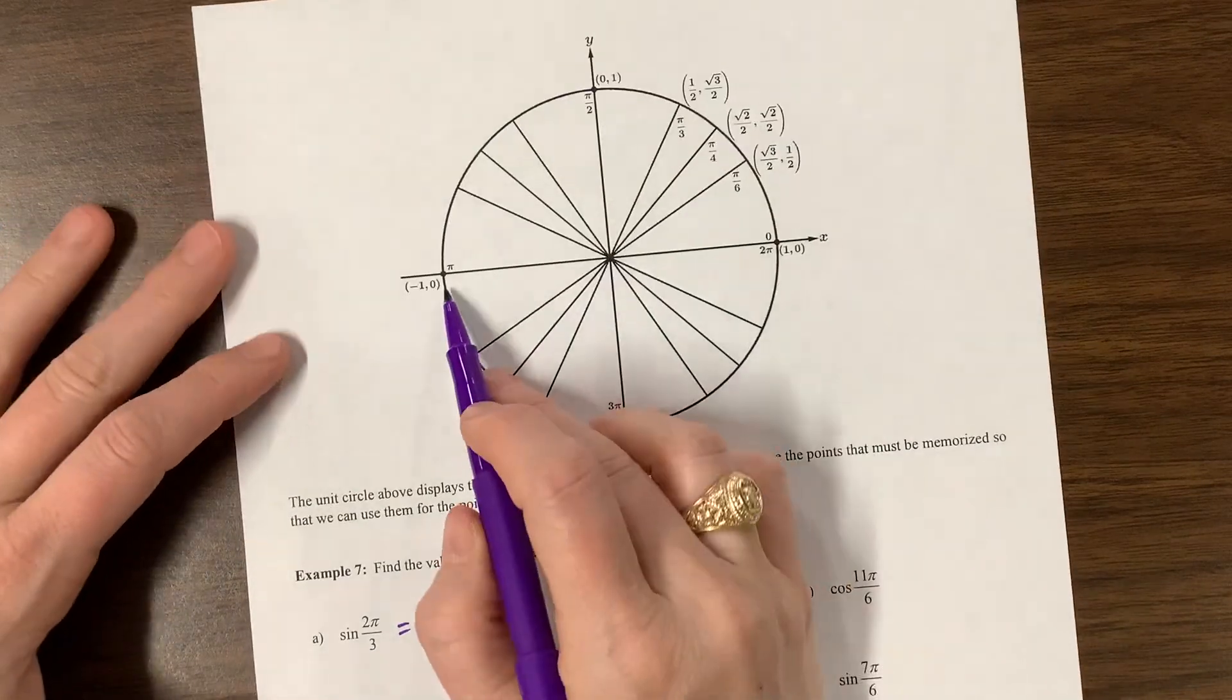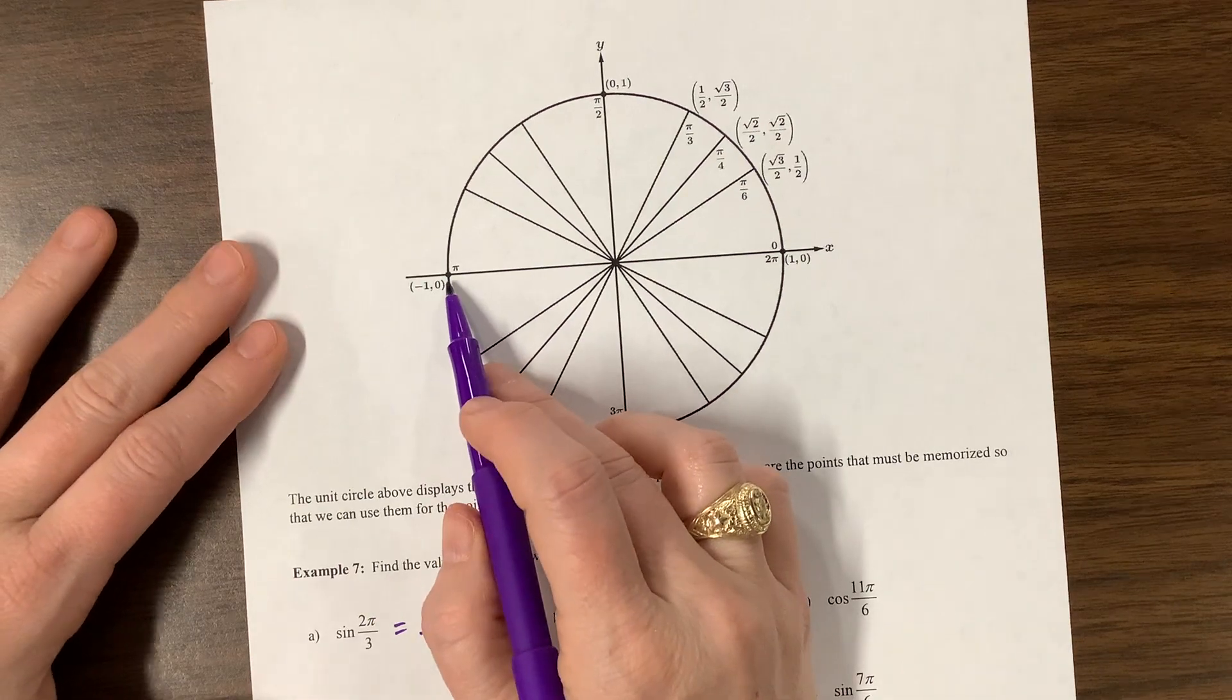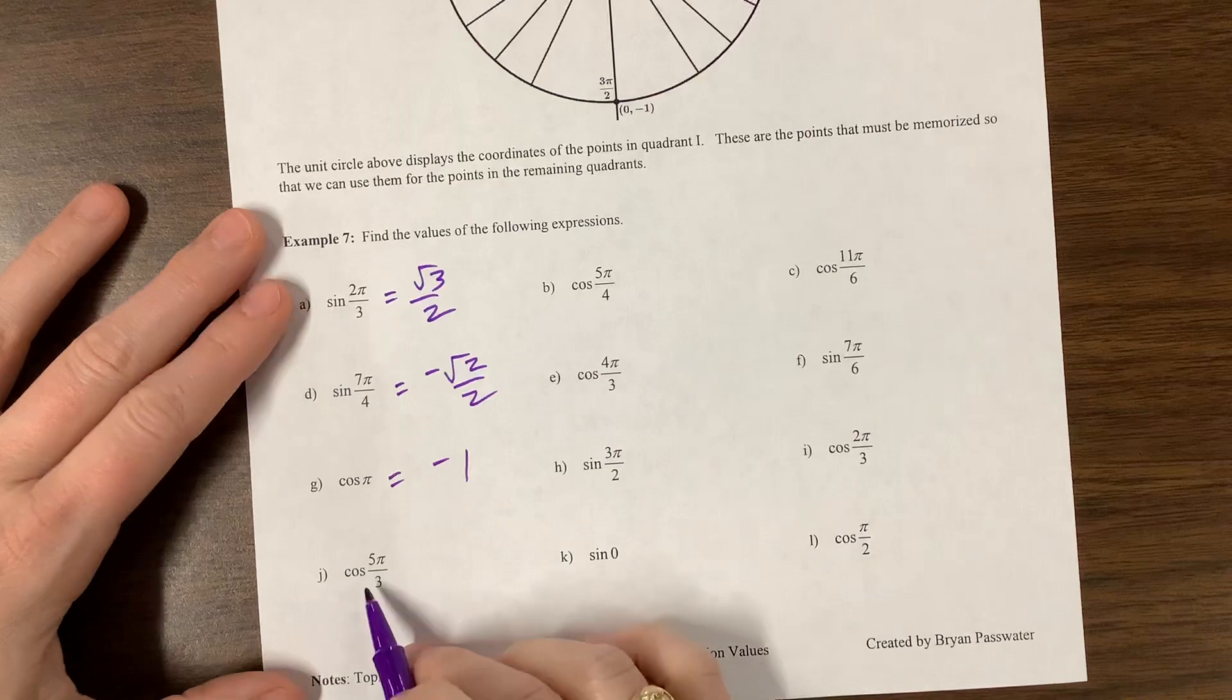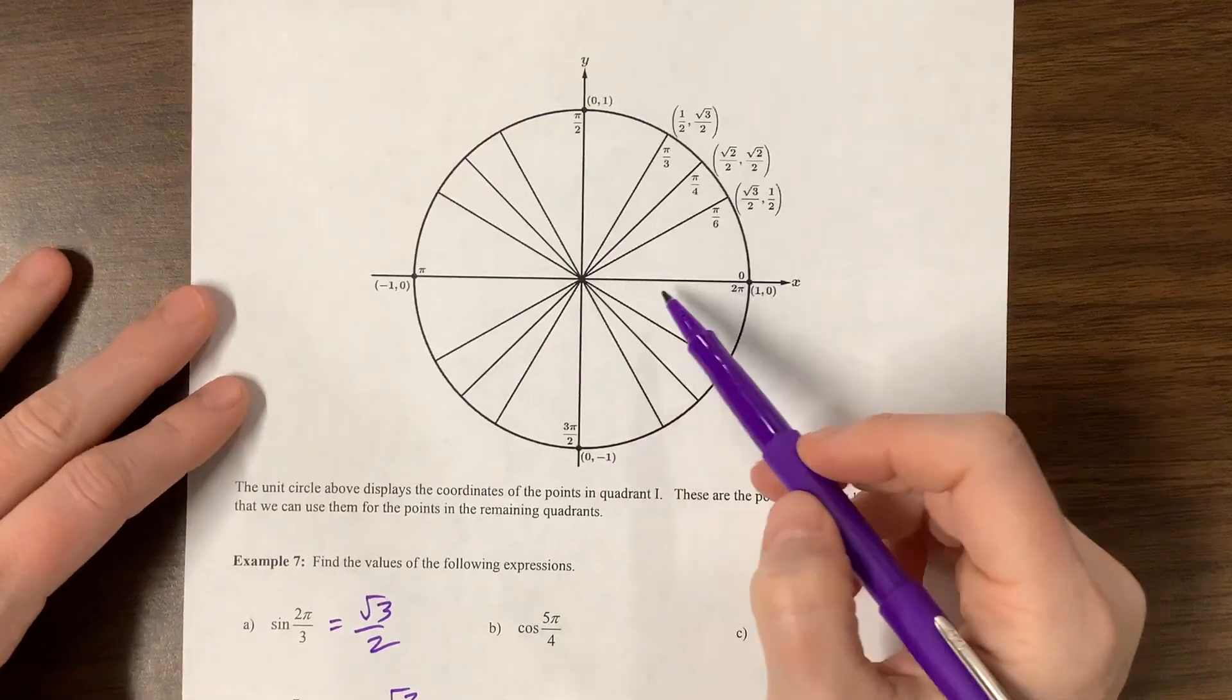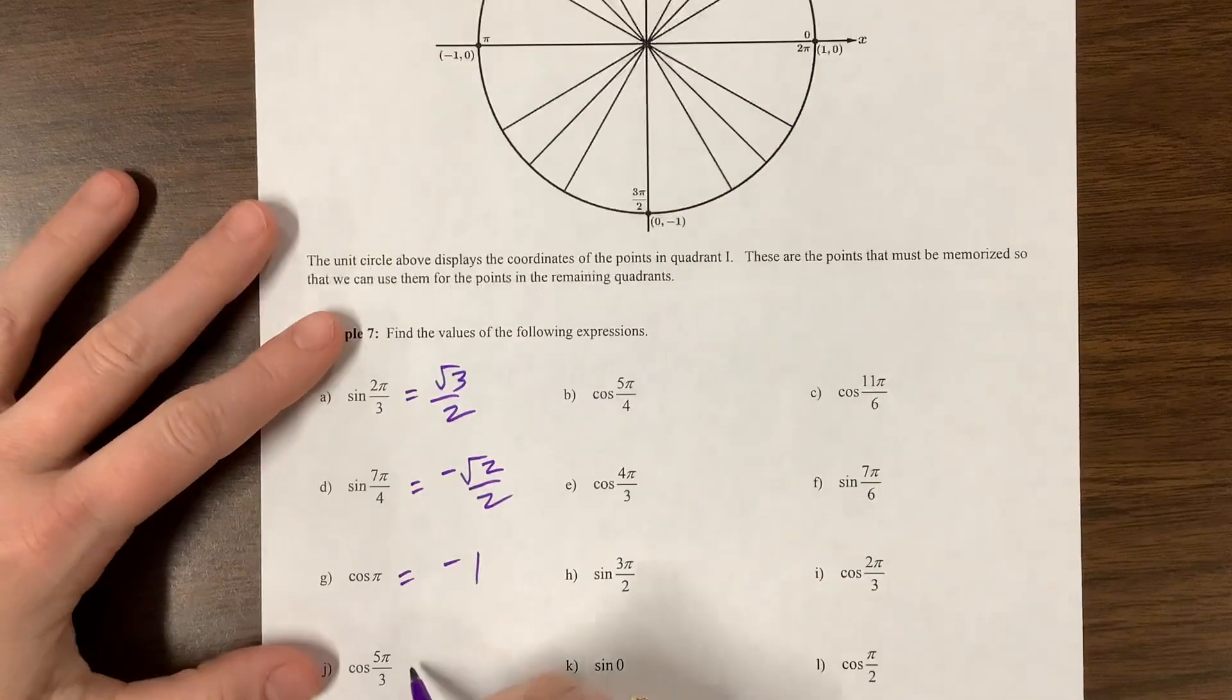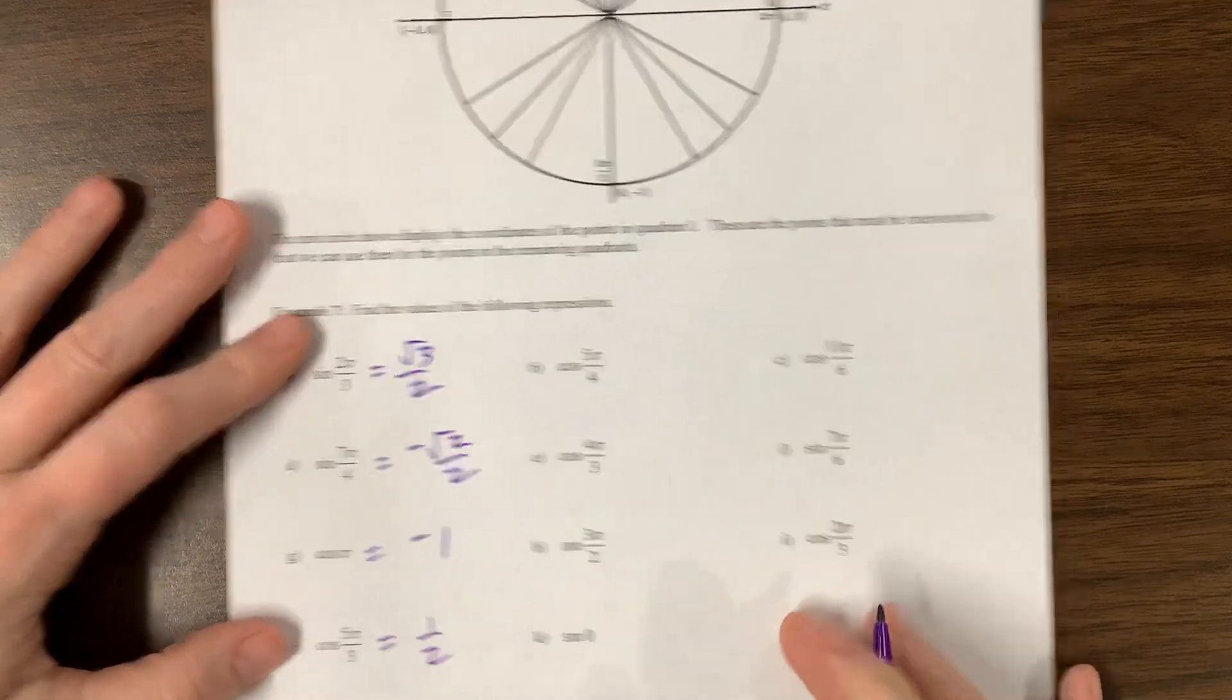Cosine of pi. Where is pi? Pi is over here. What's its cosine value? Cosine is x. We went negative 1. Cosine of 5 pi over 3. Where is 5 pi over 3? Right here. Cosine is the x. We went in a positive direction a little bit. It's 1 half.